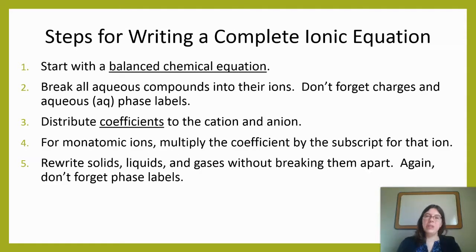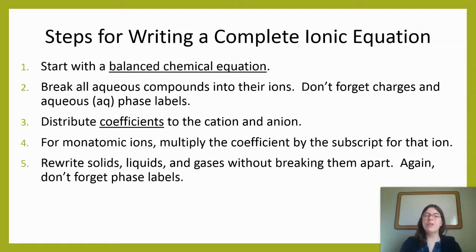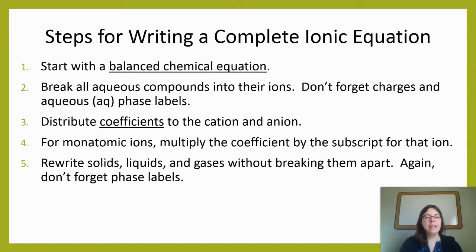The next thing we need to do is distribute the coefficients to both the cation and the anion. If we have any monatomic ions that have subscripts, we want to multiply the coefficient by the subscript for that ion so we know how many individual ions we have. Remember: solids, liquids, and gases we rewrite without breaking them up into ions because they're molecular compounds — they don't break into ions. And don't forget the phase labels.